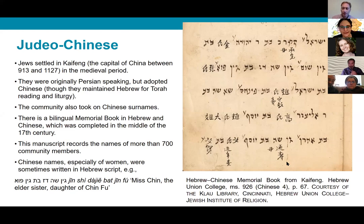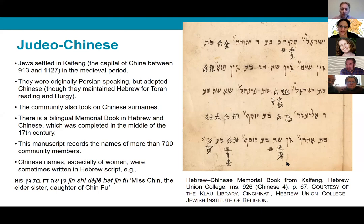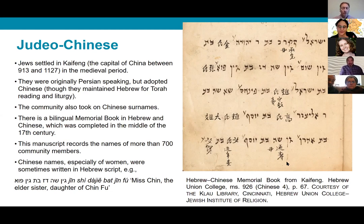You can see this reflected in the image on the right — a bilingual memorial book written in Hebrew and Chinese, completed around the middle of the 17th century. One of the tragedies about the Kaifeng Jewish community is that many of their documents, along with the synagogue and records of communal life, were destroyed on two occasions by terrible floods on the Yellow River. We're lucky that some manuscripts survived. This manuscript records the names of more than 700 community members going back over several generations.